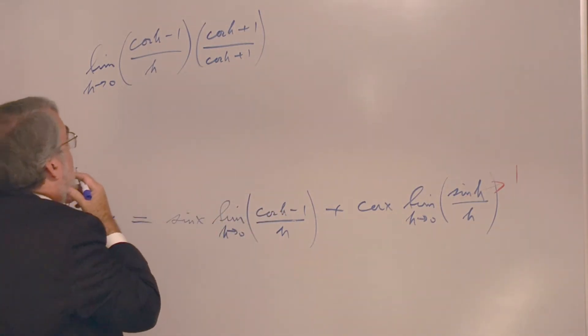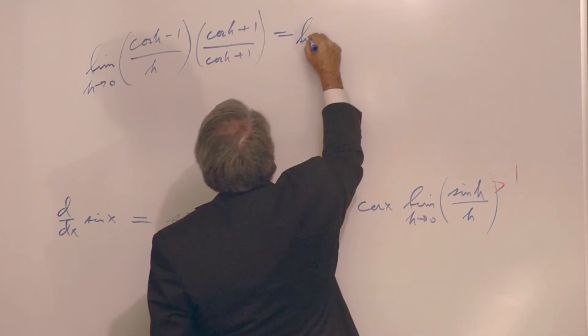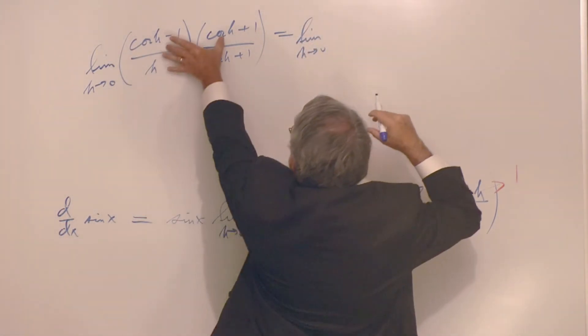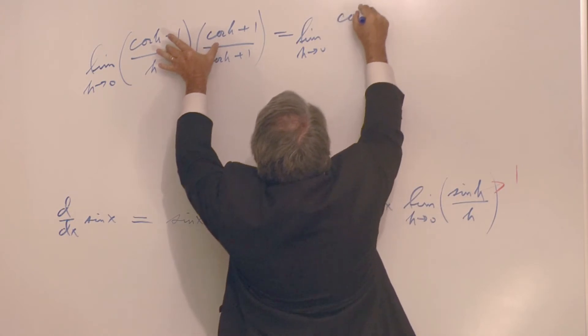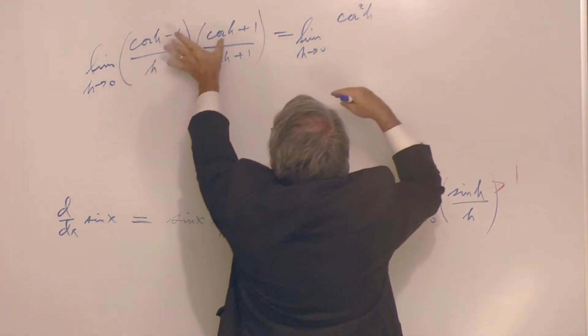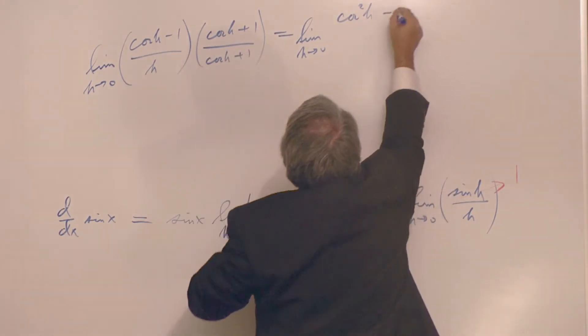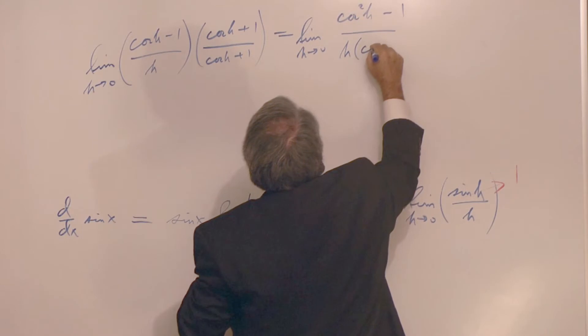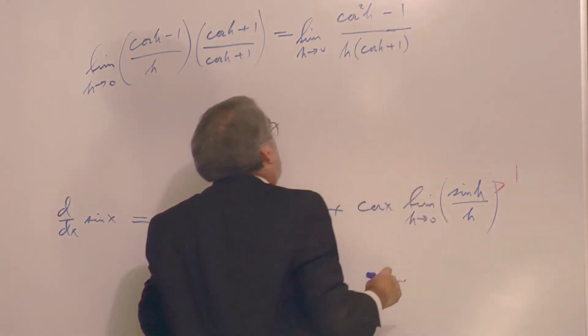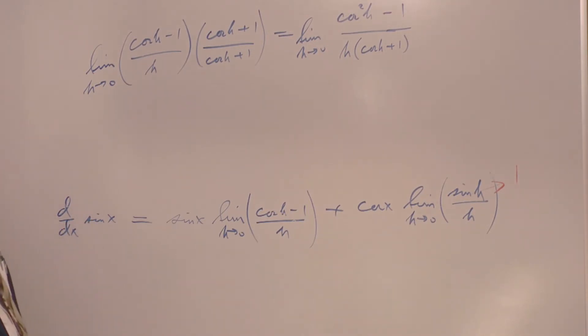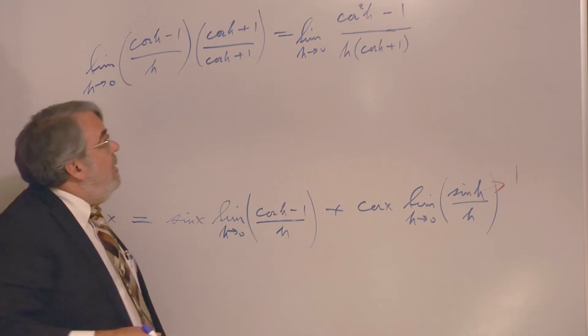If I multiply top and bottom by cosine h plus one over cosine h plus one, then we get the limit as h goes to zero. When you multiply this, you're going to get cosine squared h minus cosine plus cosine. When you foil that out, the cosines cancel. And I have minus one over h cosine h plus one. There we go.